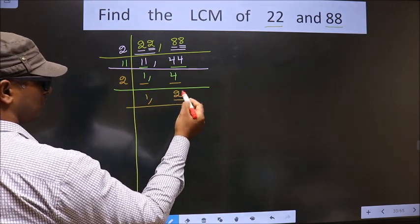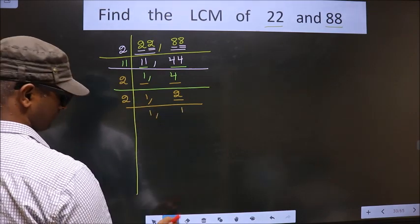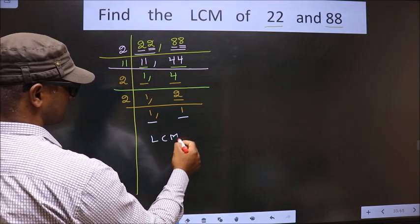Now here we have 2, 2 is a prime number. So we take 2, 1 is 2. So now we got 1 in both the places.